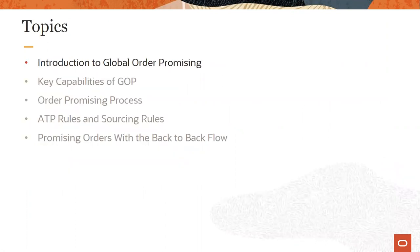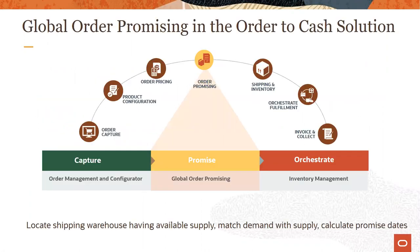Let's begin with a quick introduction to Global Order Promising. Oracle Supply Chain Management Cloud offers a comprehensive order-to-cash solution which encompasses order capture, configuration, pricing, promising, execution, and analytics. Global Order Promising or GOP is a key component of the order-to-cash solution. It improves efficiency of the enterprise by promising goods optimally.